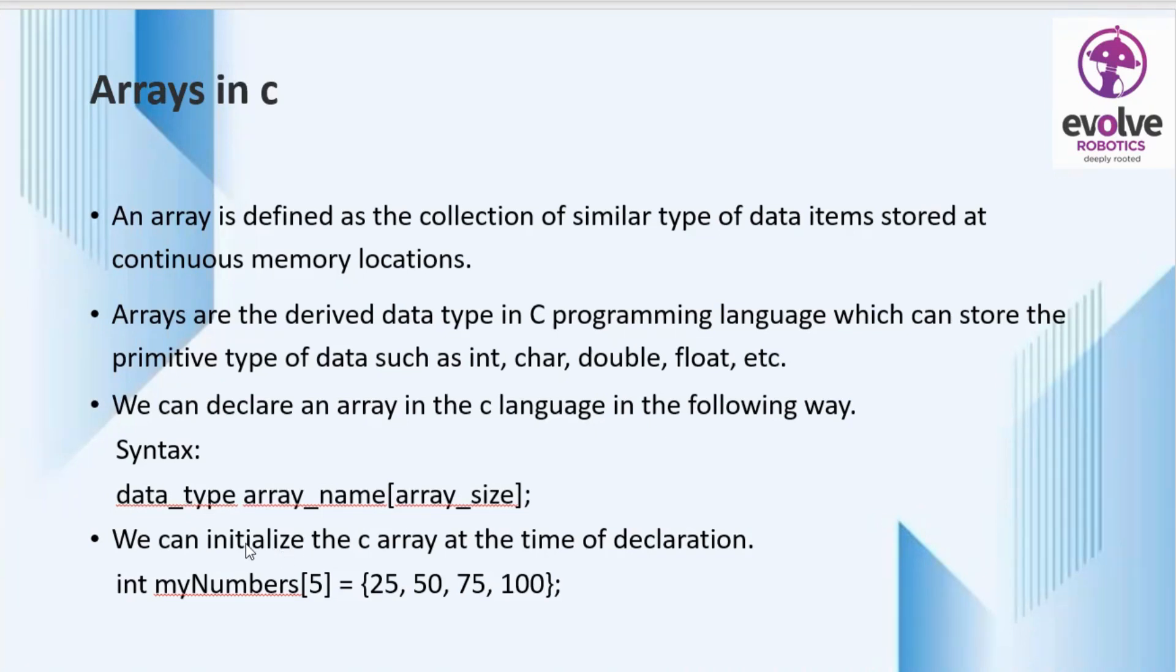We can initialize the C array at the time of declaration. So we can see here the data type int, then the name of array is myNumbers, then size of array is 5. We are assigning some values to the array myNumbers: 25, 50, 75, and 100. These values are assigned using a comma separated list inside curly braces.